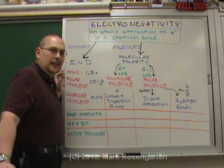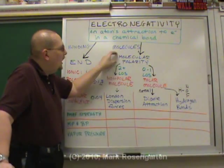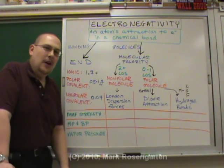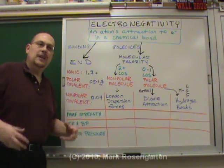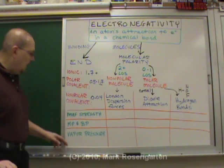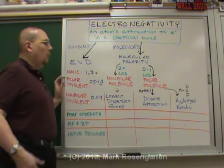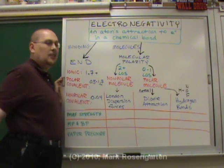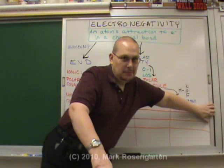The next place where electronegativity is important is in molecules - determining the polarity of molecules. Because if you know if a molecule is polar or nonpolar, you'll be able to tell the strength of its attractive forces between different molecules, the melting point and boiling point, and what kind of vapor pressure to expect. What you do is take a look at the molecule and draw lines of symmetry that slice the molecule in half.